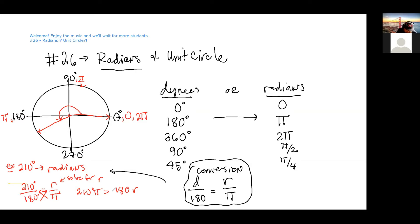I'm going to divide both sides by 180. The pi is part of our answer, so technically my answer is 210 over 180 times pi. However, we're going to reduce that fraction all the way down. 210 over 180 reduces down to 7 pi over 6. Very good — r is 7/6 of pi, or 7π/6.